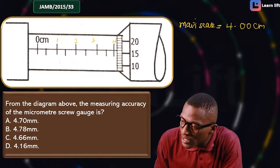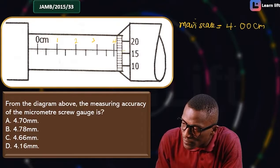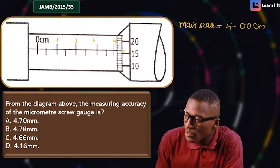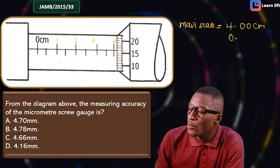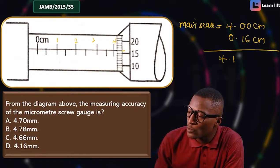On the screw scale, if here is 10, then 11, 12, 13, 14, 15, 16. The lines meet at 15 or 16 — reading it carefully, it's at 15.16, so the screw scale reading is 0.16 mm. Total: 4.00 + 0.16 = 4.16 mm.